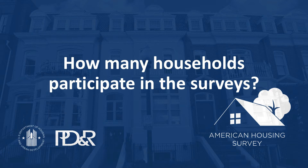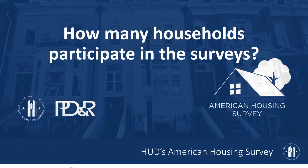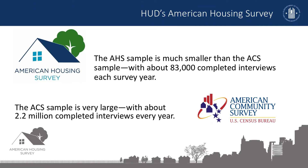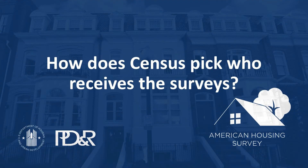Now, let's look at each survey's sample design — for example, how many households participate in each survey. The AHS sample is much smaller than the ACS sample, with about 83,000 completed interviews each survey year. The ACS sample is very large, with about 2.2 million completed interviews every year. For both surveys, the Census Bureau randomly selects households to participate, but there are important differences in the way Census selects which households to survey for each.